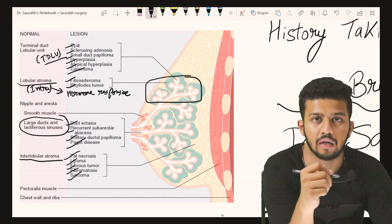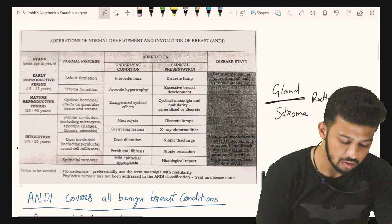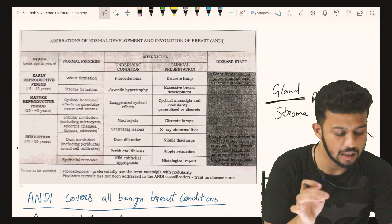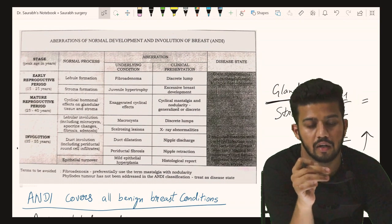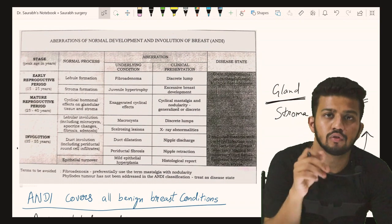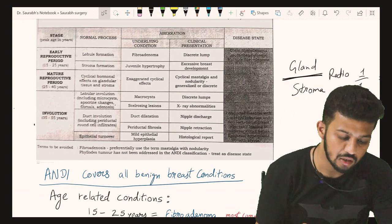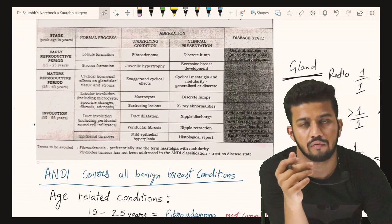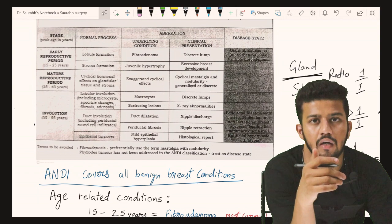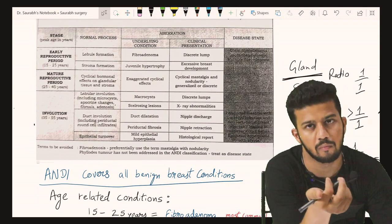One more thing we must learn is the ANDI classification — Aberrations of Normal Development and Involution of the breast. This covers all benign breast conditions and tells us about the different stages of breast development and what diseases arise during these developmental stages.